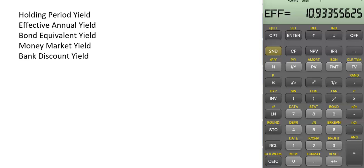Hello guys, this is Shweb Yaakob. In today's session we are going to cover five different yields: holding period yield, effective annual yield, bond equivalent yield, money market yield, and bank discount yield.